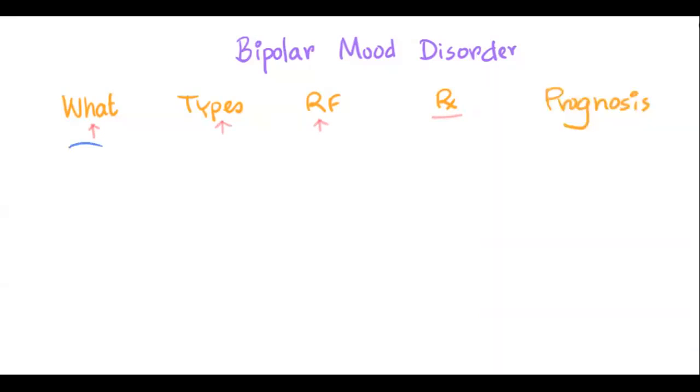So what is bipolar mood disorder? As the name suggests, it has two poles—bipolar—and it's a mood disorder. You have change in mood. The mood can be up, the mood can be down, and those are the two poles.